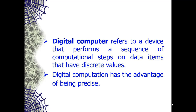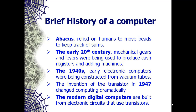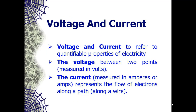A brief history of the computer: the abacus relied on humans to move the beads to keep track of sums. In the early 20th century, mechanical gears and levers were used to produce cash registers and adding machines. In the 1940s, early electronic computers were constructed from vacuum tubes. The invention of the transistor between 1947 and 1950 changed computing dramatically. Modern digital computers are built from electronic circuits that use transistors, which greatly improved computing power.